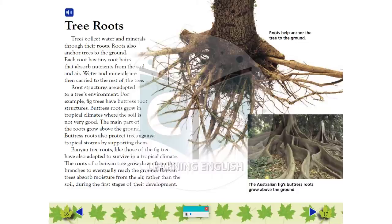Tree Roots: Trees collect water and minerals through their roots. Roots also anchor trees to the ground. Each root has tiny root hairs that absorb nutrients from the soil and air. Water and minerals are then carried to the rest of the tree.